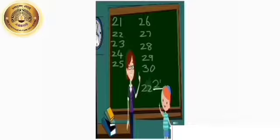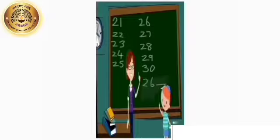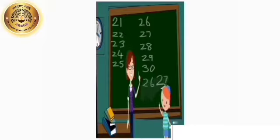So we have to write number 23 here. Understood, children? Very good. Here number 26 is already given — here is another example of after number. If number 26 is already given, tell me which number comes after number 26, children? Yes, it is number 27. So we have to write number 27 here. Understood, children? Very good.